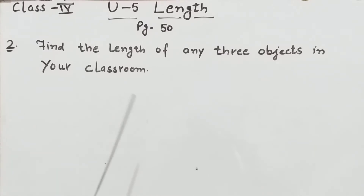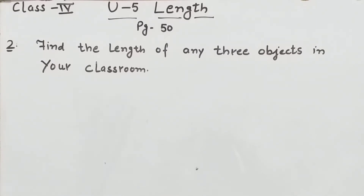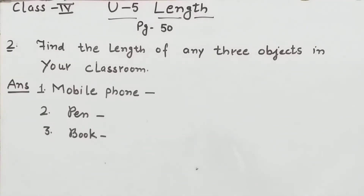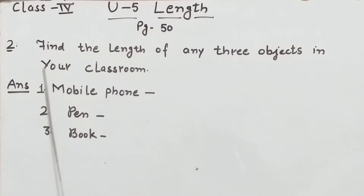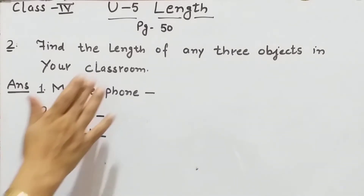सबसे पहला object जो आपके hand में है जिससे आप पढ़ रहे हो — वो है mobile phone। Mobile phone की length हम measure कर सकते हैं। आप सभी के पास ऐसे objects हैं जिनसे आप पढ़ते हो जैसे कि pen — pen की length हम measure कर सकते हैं। आप अपनी notebook की length को measure कर सकते हो। तो देखें, आप इसको अपनी notebook पे कैसे करोगे?